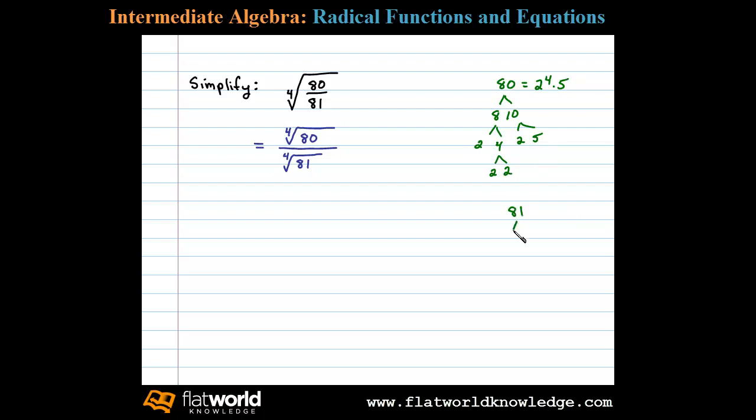Now we can do the same thing with 81, factoring as 9 times 9. Each factor of 9 can be factored further as 3 times 3. So 81 can be written as 3 to the 4th power.